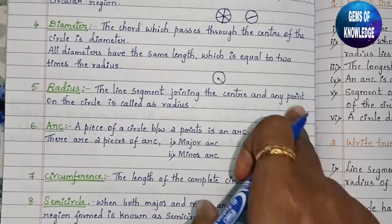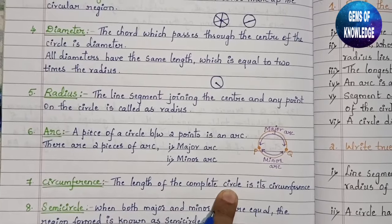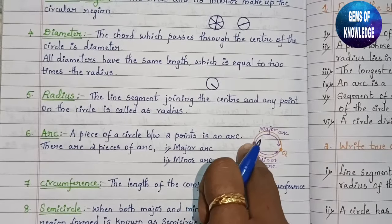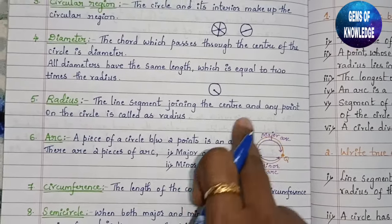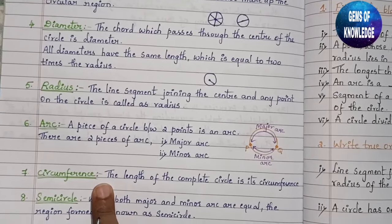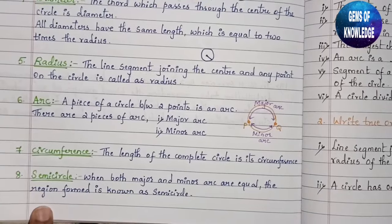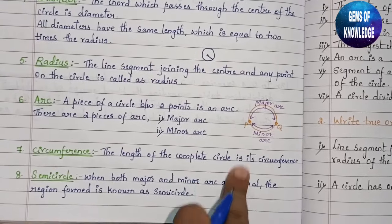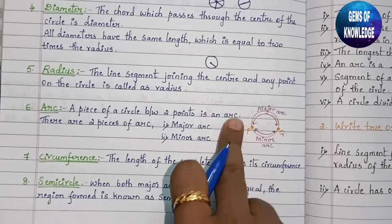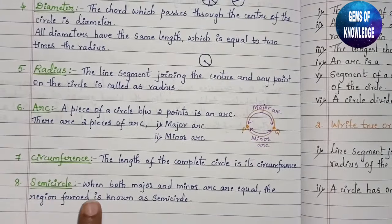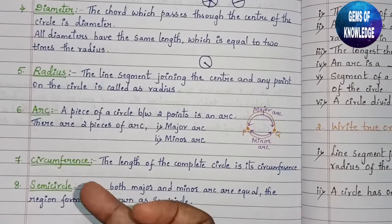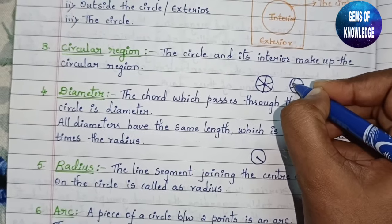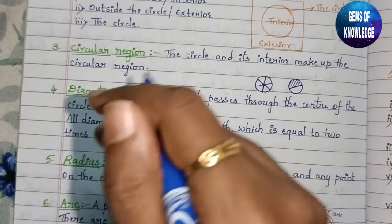Next, circumference is the complete length of the outer line of the circle — from point P all the way around back to P. That whole part is called the circumference. Next is semicircle — half of the circle. When both the major and minor arcs are equal, the region formed is known as a semicircle.